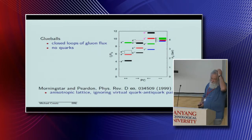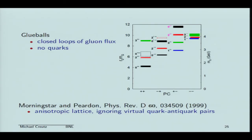You can ask questions about particles we haven't clearly seen yet. This was a paper from Morningstar and Peardon trying to measure glueballs — bound states of the gluon. This is done without any dynamical quarks, looking at the gluon fields alone, and they find various states. But when you put the quarks in, there's an issue of mixing between the quark states and the glueball states, which gets very complicated.